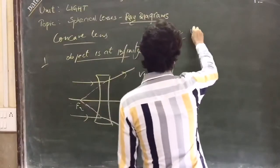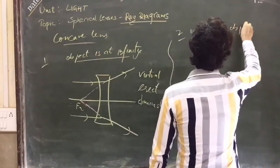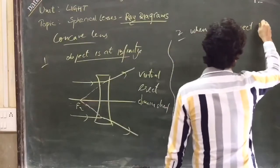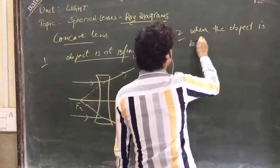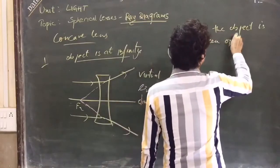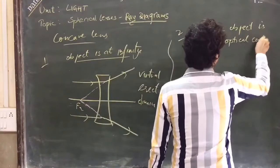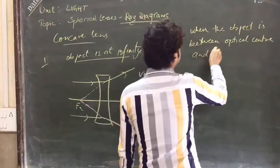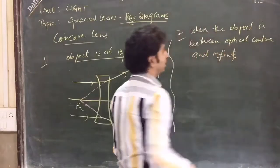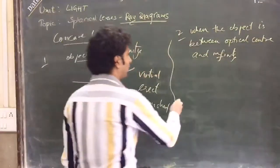Now if you want to see the general case when the object is between optical center and infinity, anywhere if I am going to place the object, again you will see that virtual images will be formed.